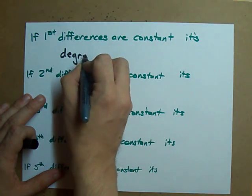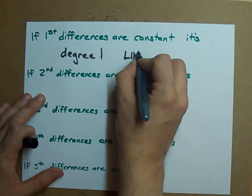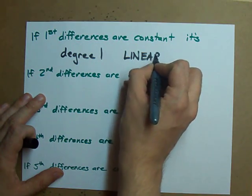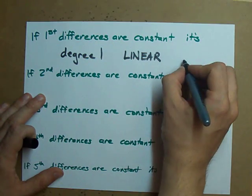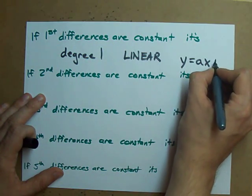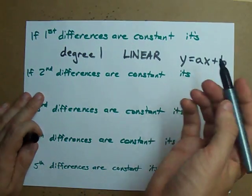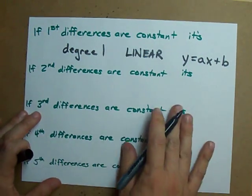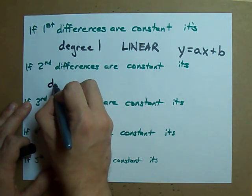The second differences were constant for my equation that had degree 2, which I like to call a quadratic. The equation for that would have been y equals ax squared plus bx plus c, not knowing what the numbers are.